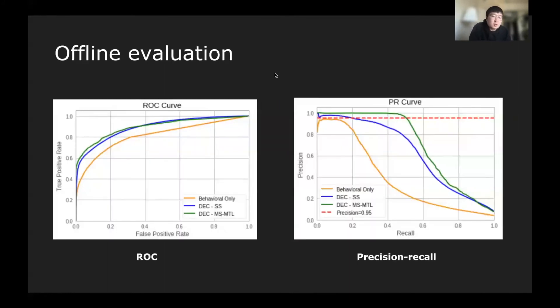Here's the online evaluation result. The ROC curve and the PR curve. Both of them, as you can see here, the green line represents the results from the state-of-art DEC multi-stage multi-task learning model. It actually outperforms the other two.